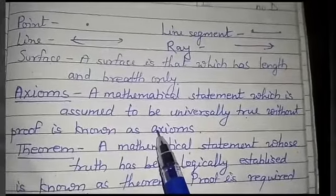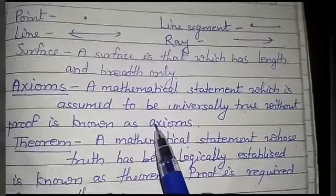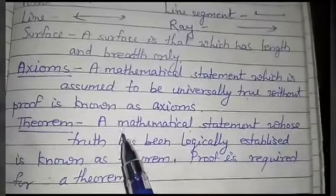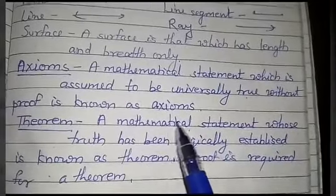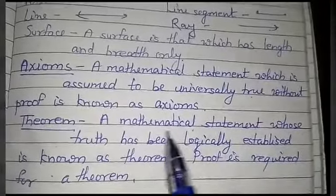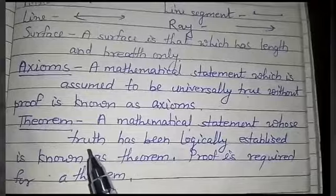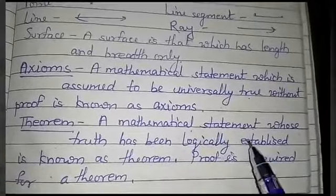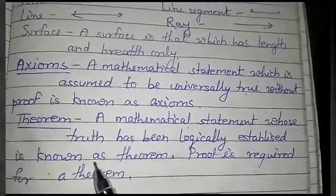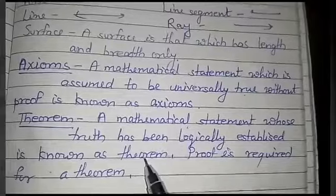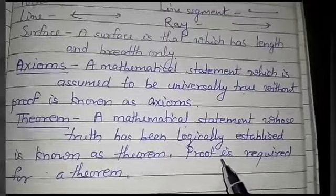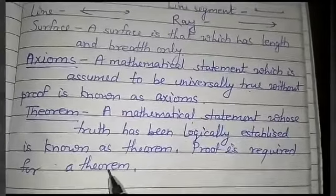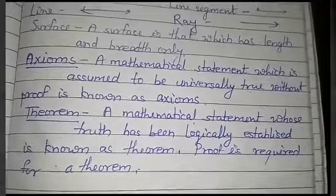An axiom is a mathematical statement which is assumed to be universally true without proof — no proof is needed. A theorem is a mathematical statement whose truth has been logically established — proof is required for a theorem.